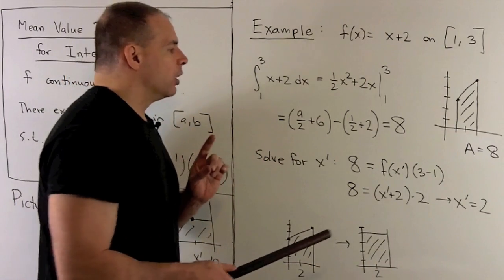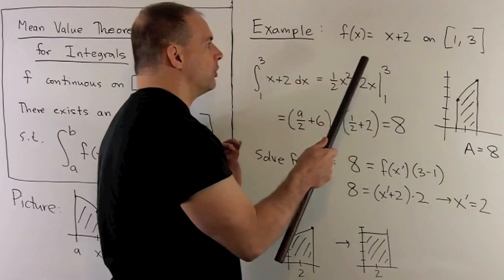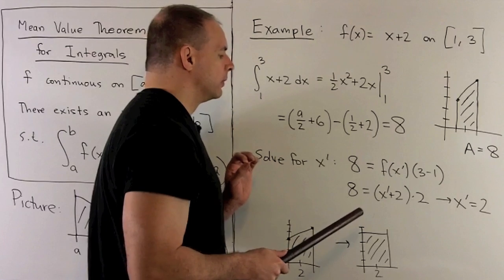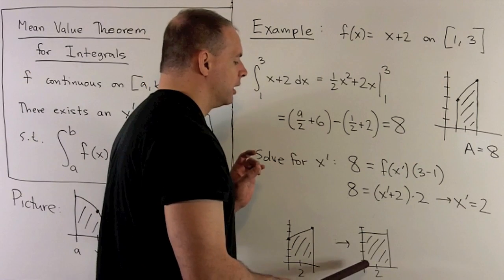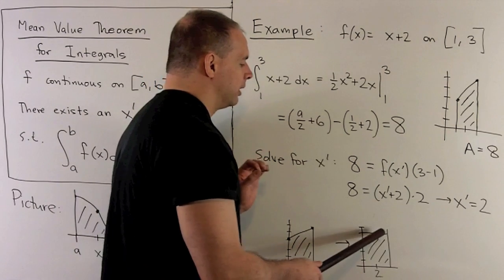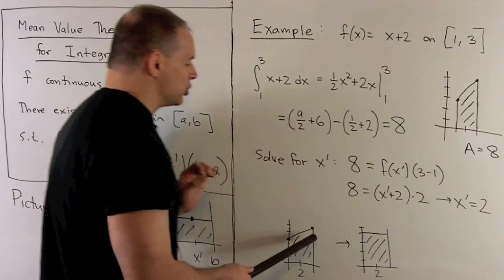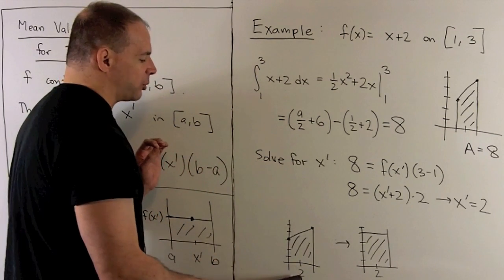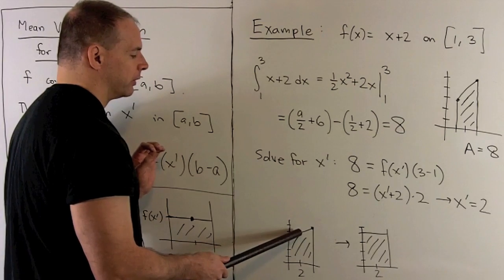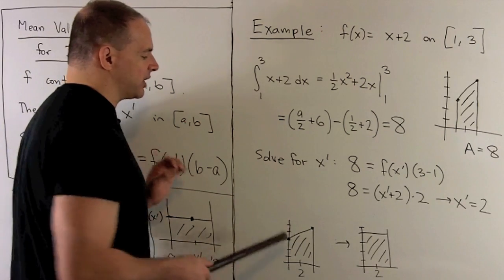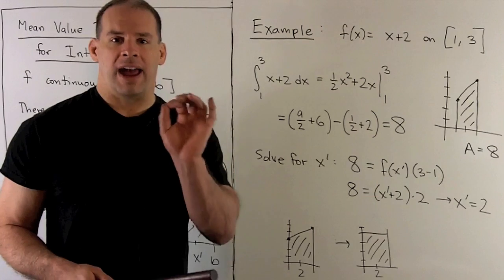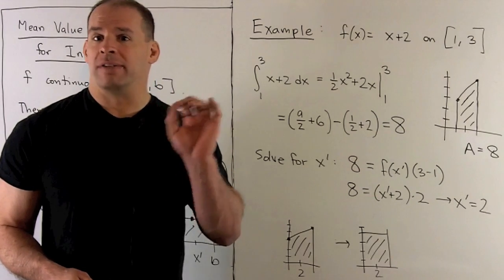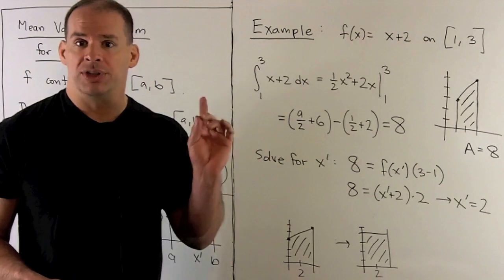So, what does that say? Well, if we put 2 back into the function, we're going to get height equal to 4. So, it's going to be this rectangle here. Now, the idea is going to be, we take this line and just draw it through our original graph. That's going to intersect at x' equal to 2. So, the idea is if we shake up this area, it levels off at height 4 and the function takes on the value 4 at x' equal to 2.